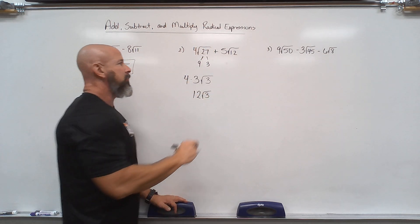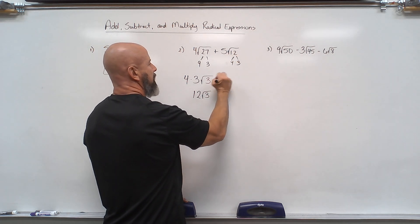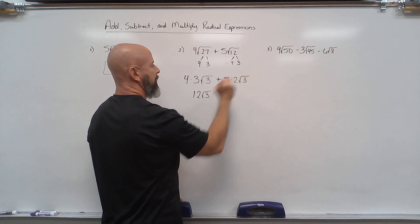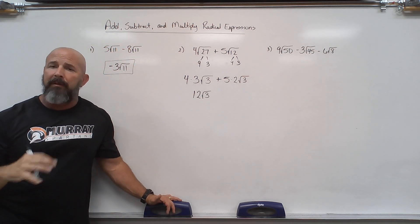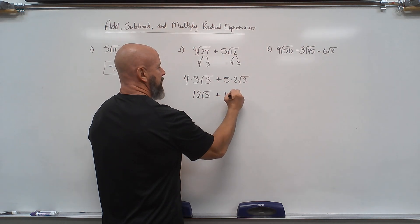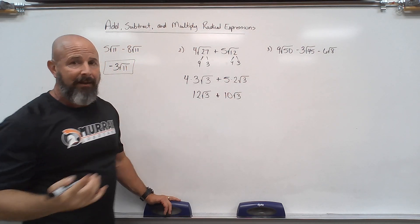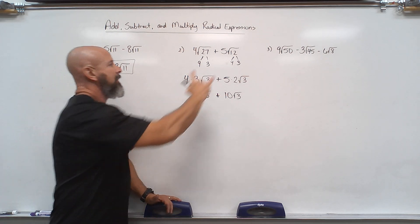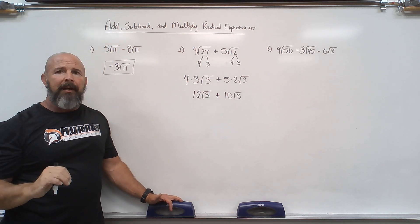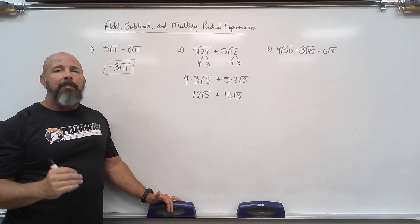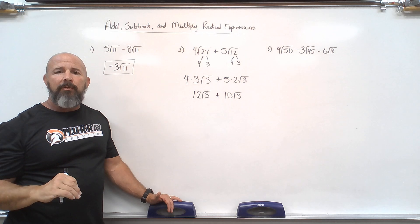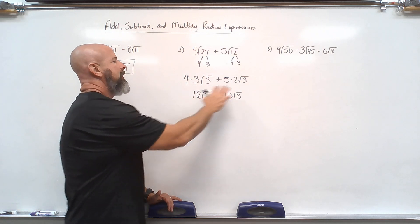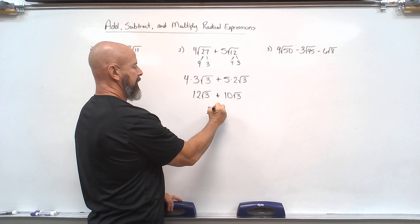The square root of 9 is 3, so I've got a 3 coming out and that other 3 is staying in, giving me 12 root 3. So I've simplified that first radical. For the second radical, 5 root 12: 12 is 4 times 3, and the square root of 4 is 2, so that gives 10 root 3. Now I have like terms, so I can add them — 12 plus 10 gives 22 root 3.